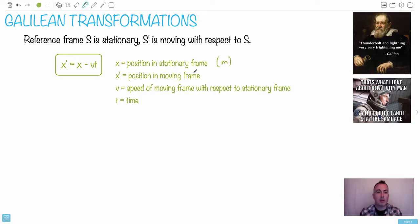Position, that would be in meters. We have X prime, that's the position in the moving frame, also in meters. So the primes represent moving frame things, right? Now V is the speed of the moving frame with respect to the stationary frame. What's often used here as an example is like a train or something like that.